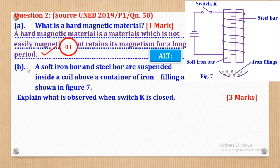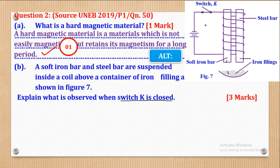Part B says: a soft iron bar and steel bar are suspended inside a coil above a container of iron filings as shown in Figure 7. This is the soft iron bar and this is the steel bar, and these are the iron filings. They say: explain what is observed when switch K is closed.